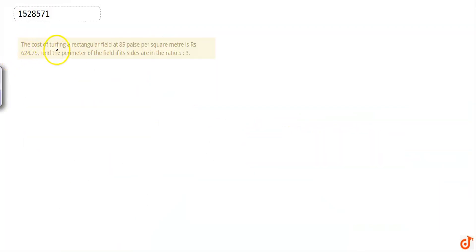Our question is, the cost of turfing a rectangular field at 85 paise per square meter is Rs. 624.75. Find the perimeter of the field if its sides are in the ratio of 5 is to 3.